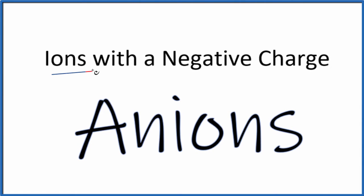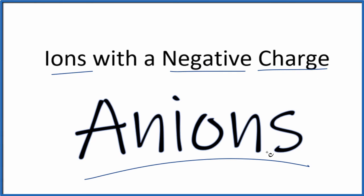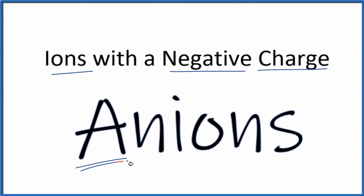Let's take a look at ions that have a negative charge. When an ion has a negative charge, we call it an anion. You can think of anion as meaning a negative ion — that's a good way to remember it. Anions are negative ions and they'll have a negative sign.